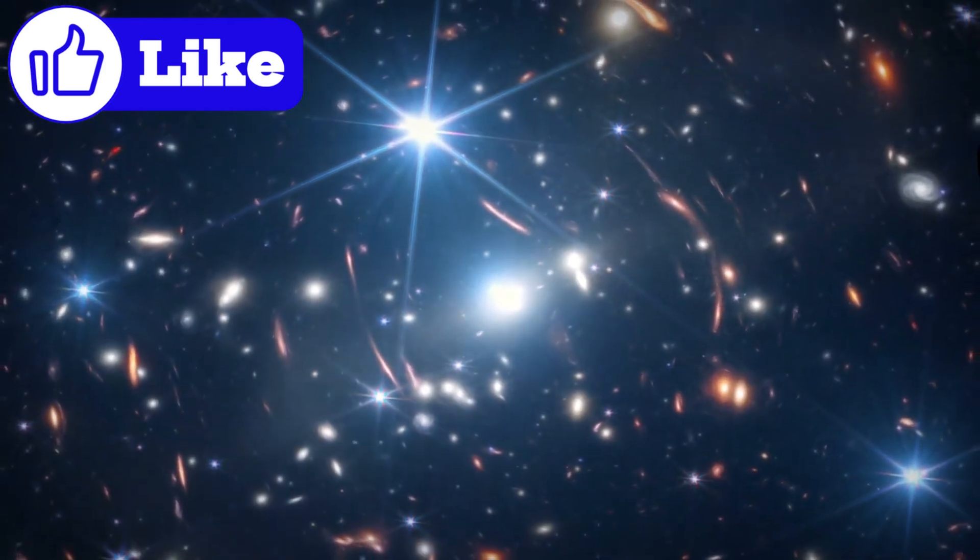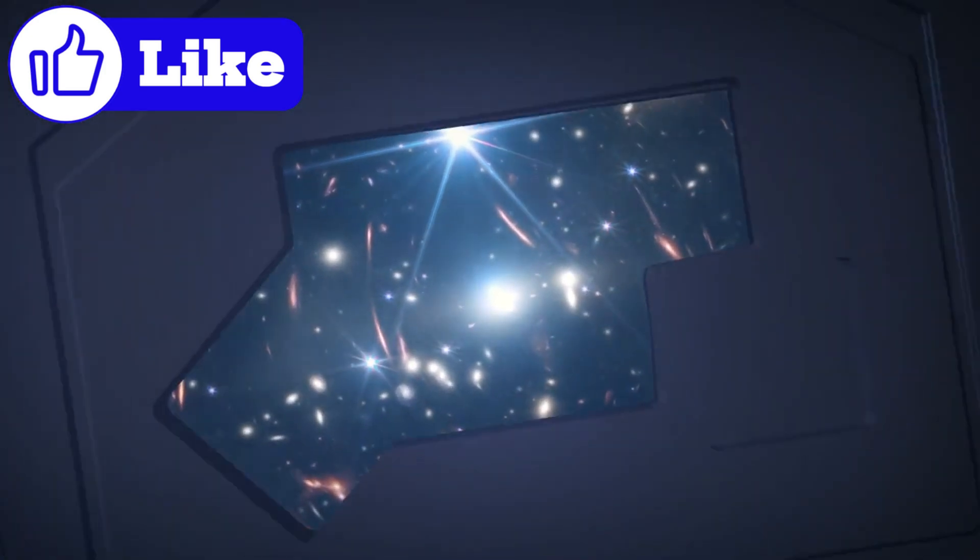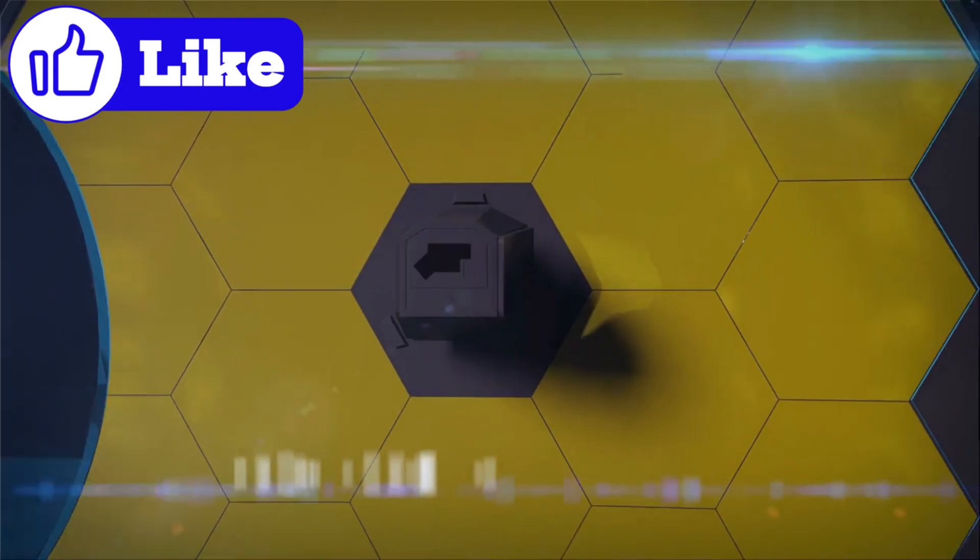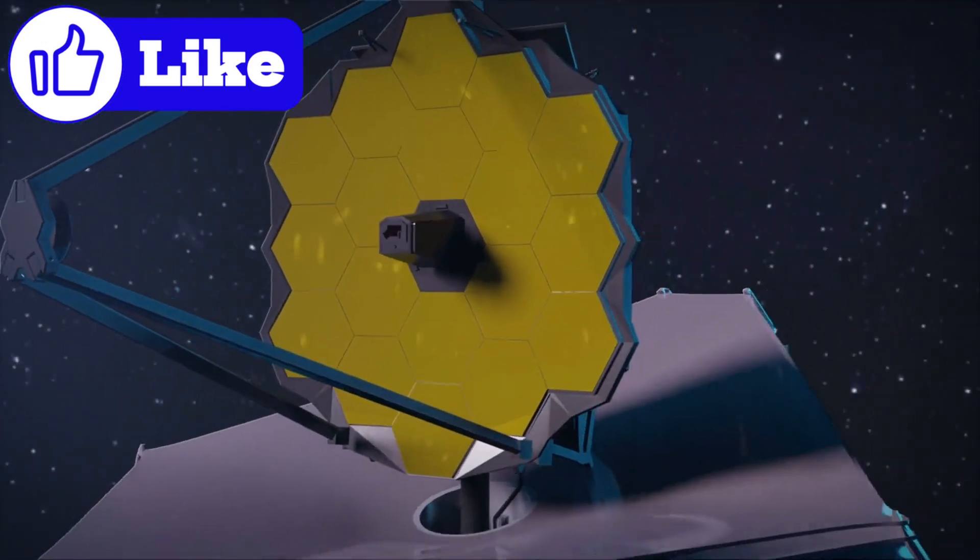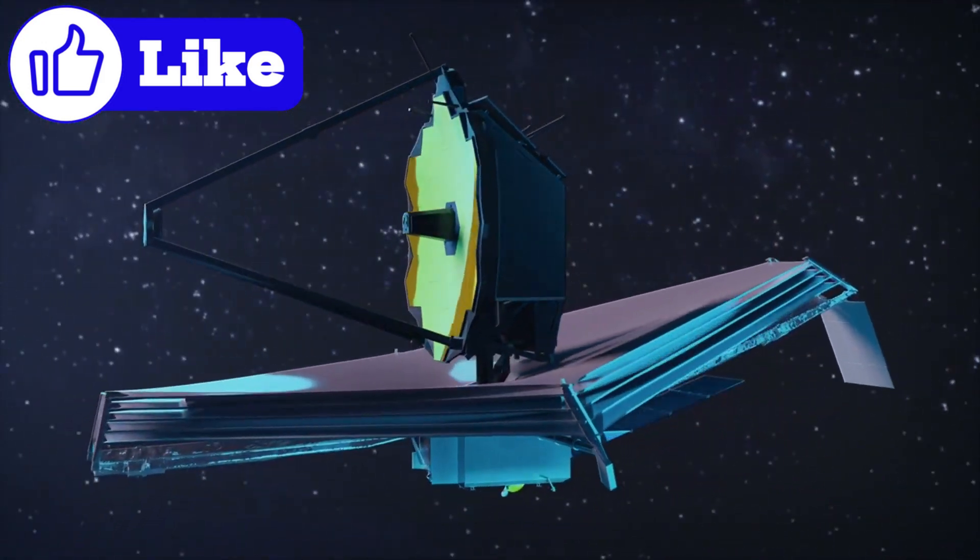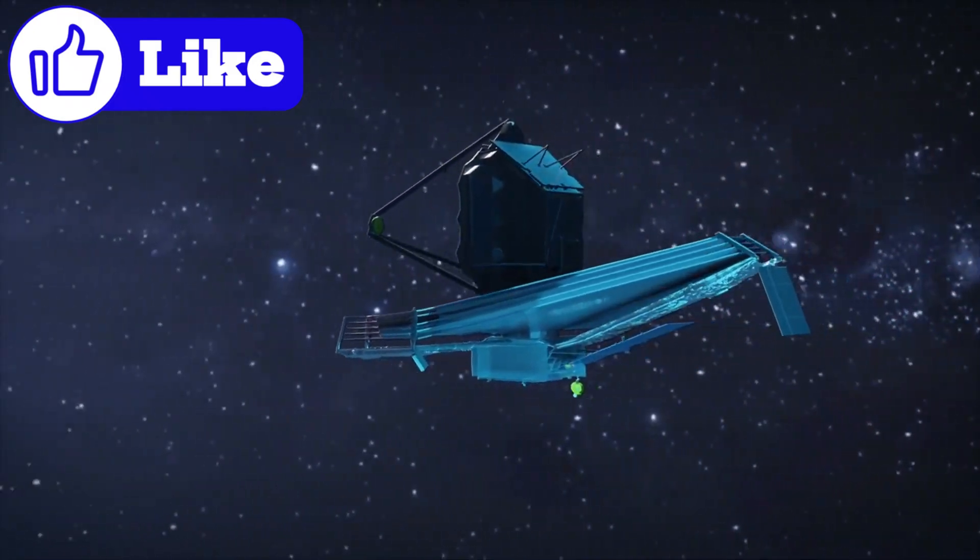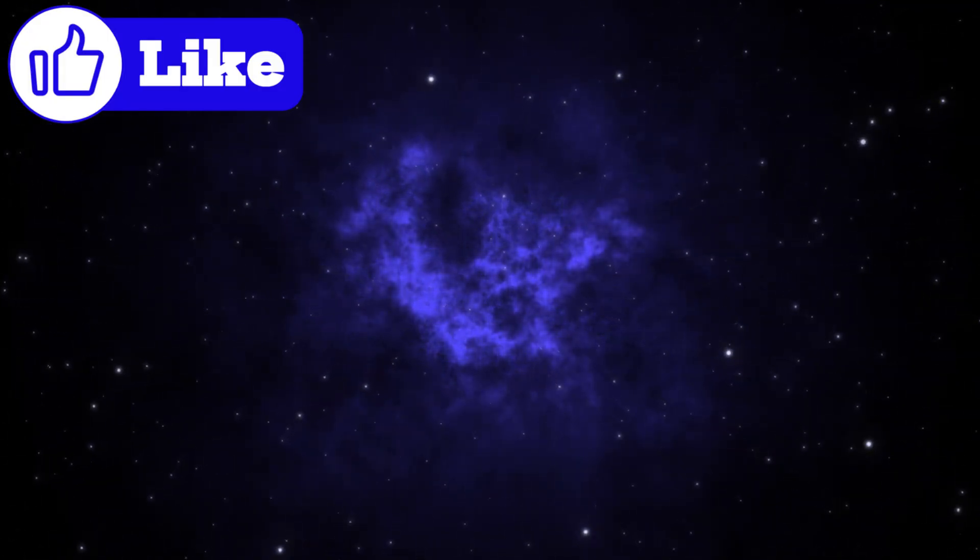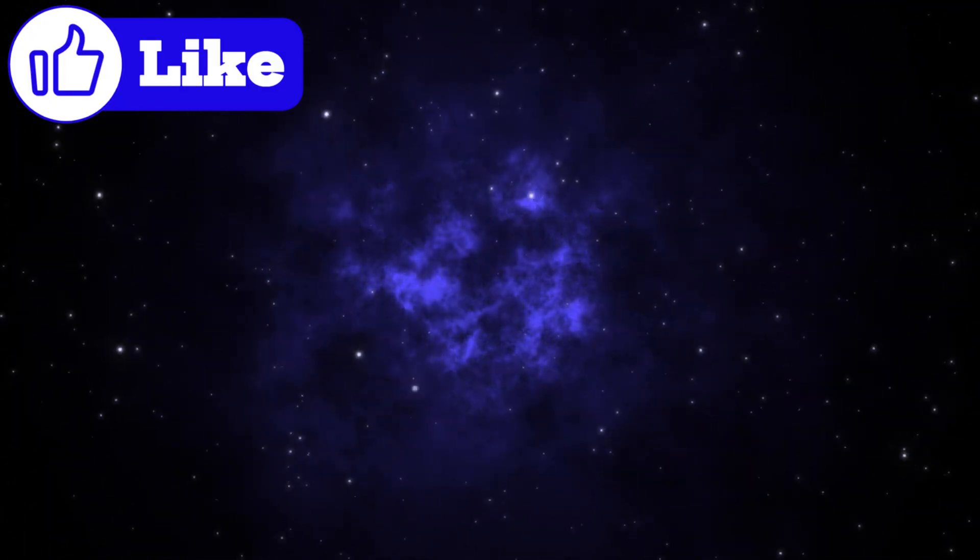Tonight, we're diving into one of the most alarming stories making the rounds on social media: rumors that the James Webb Space Telescope has spotted a massive, unidentified object roughly 10 light-years away, racing toward Earth. Whether it's fact or fiction, the mere possibility has the world buzzing with questions.